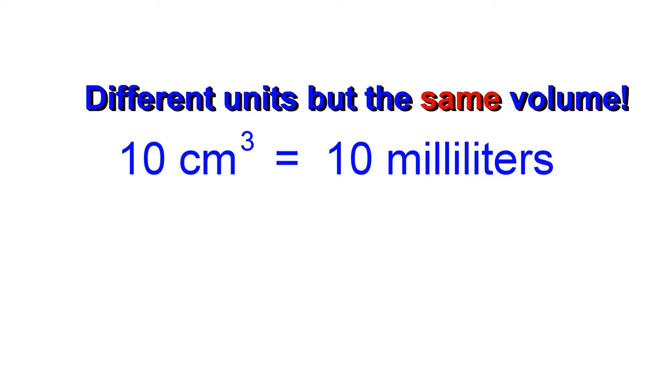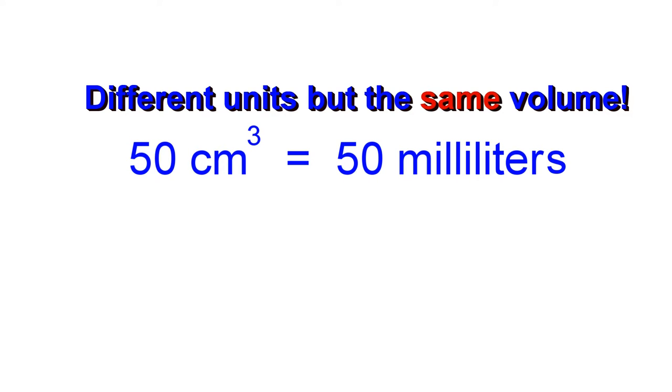So if you have a volume of 10 cubic centimeters, it will be equal to a volume of 10 milliliters. And if you have a volume of 50 cubic centimeters, it will equal a volume of 50 milliliters.